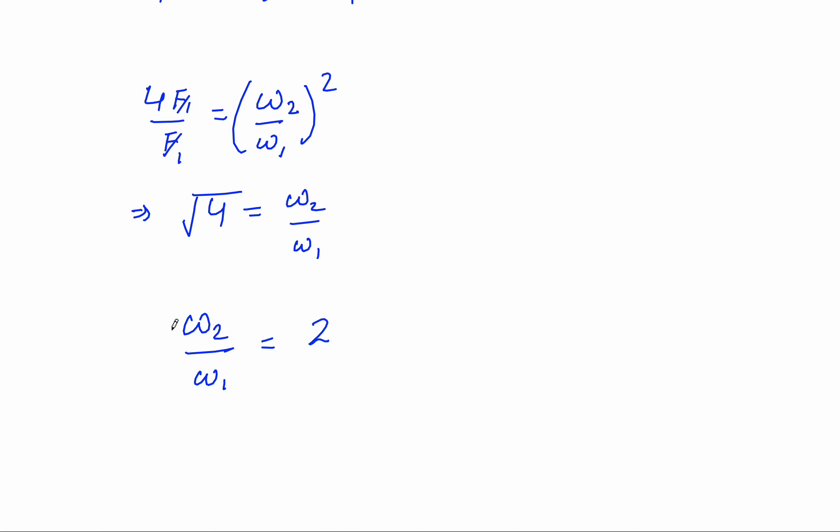From this, we know that F2 is 4 times of F1. So this gives us omega2 upon omega1, whole squared. F1 and F1 cancel out, leaving 4 equals omega2 upon omega1 squared. Taking the square root to the left-hand side, we get omega2 by omega1 equals 2.